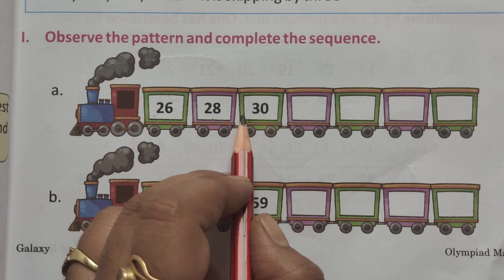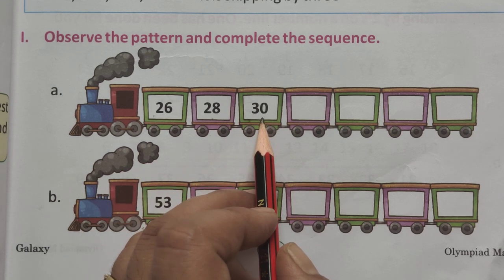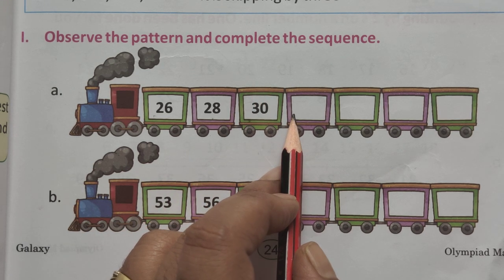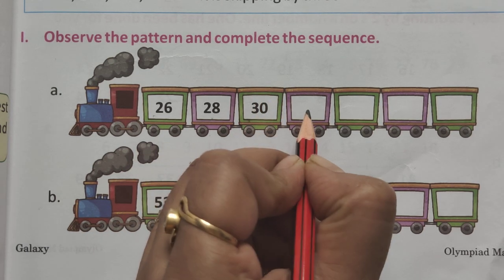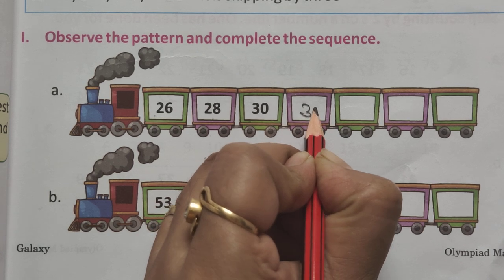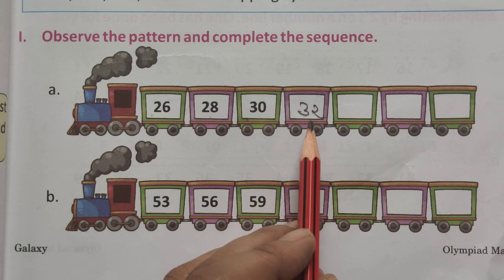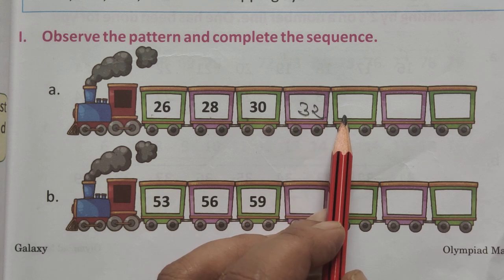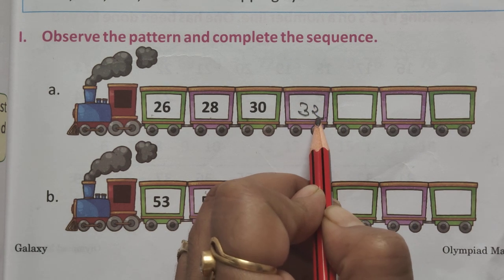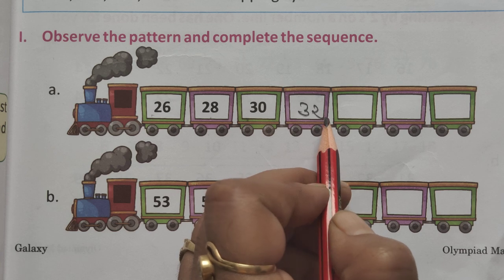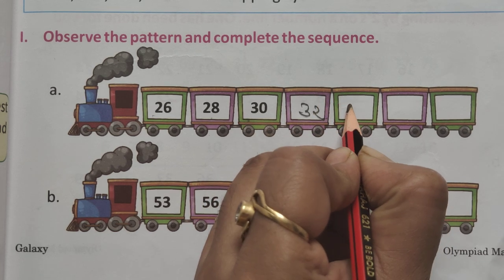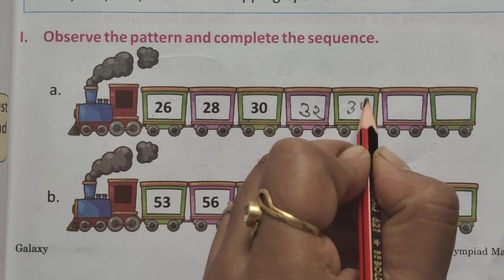After that, two skip number, 31 and 32. Is that clear? Then, 32 after two skips, count the number, 33 and 34.